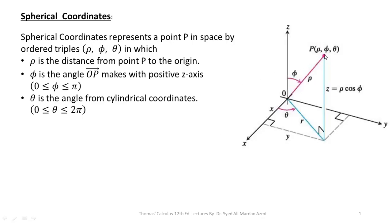Spherical coordinates represents a point being spaced by the ordered triples rho, phi and theta, where rho is the distance of the point from the origin, phi is the angle which the line OP makes with positive z-axis, and theta is the angle from cylindrical coordinates.